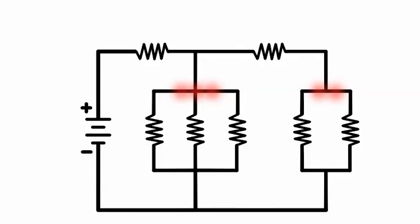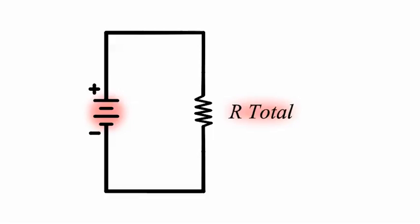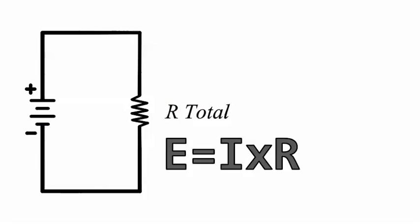In order to find the current in each parallel branch and the voltage drops through each resistor, we must first know the total resistance and the voltage. Then we can use Ohm's law to find the current.